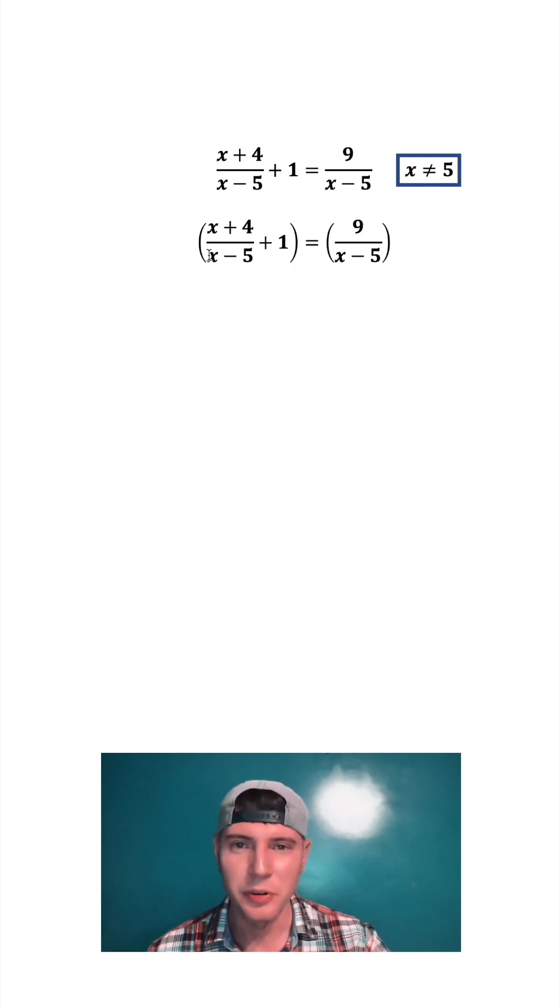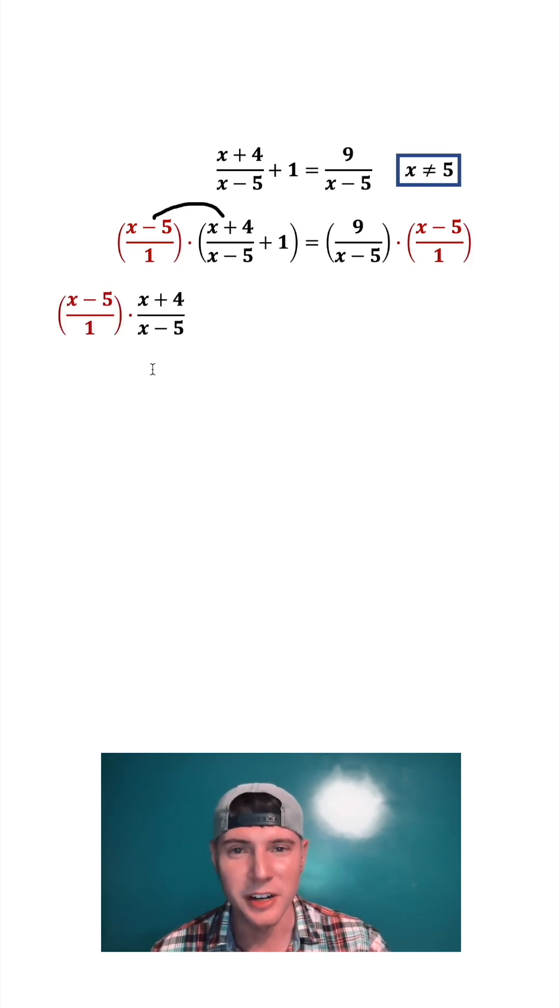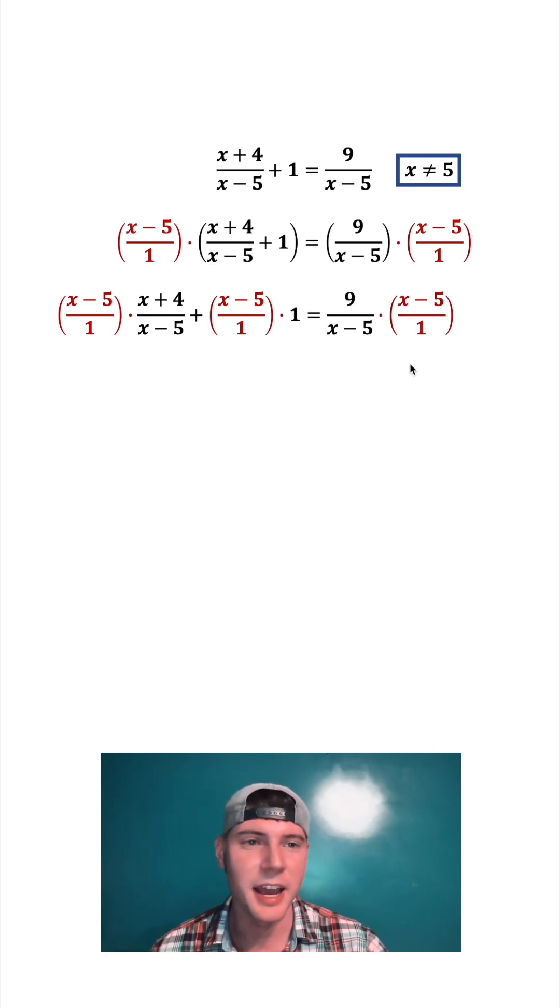Next, copy this down and put parentheses on both sides. We're going to multiply both sides by x minus 5 over 1. On the left hand side it distributes to the first term, plus it distributes to the second term - this x minus 5 times the 1. That's all equal to this side as it is.